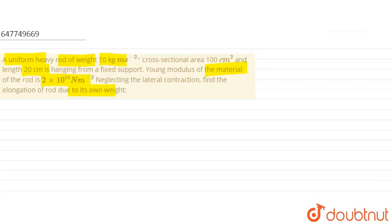What is given in the question? The rod's weight W equals 10 N. The cross-sectional area is given as 100 cm², which is 100×10^-4 m². And the length is 20 cm, which is 0.2 m.